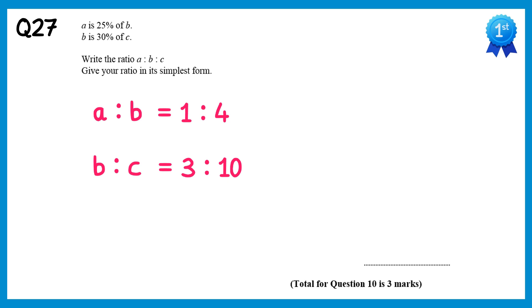To write these as a combined ratio a to b to c, we need to match up the thing that's common to both, which is b. In the top ratio b represents 4 parts, and in the bottom ratio it represents 3 parts. So if we can make these numbers match, we can join up the ratios. If you times the top ratio by 3 now, you'll get 3 to 12, and if you times the bottom ratio by 4, you'll get 12 to 40. So now the b is represented by 12 in both ratios. So the ratio of a to b is 3 to 12, but the ratio of b to c is 12 to 40, so we can just put a 40 on the end here.